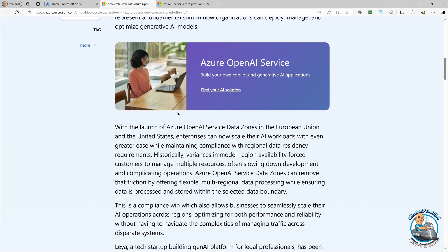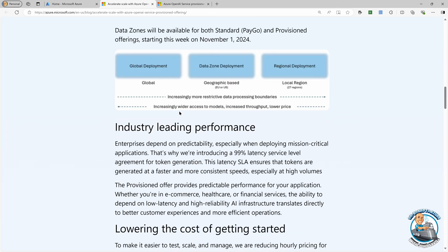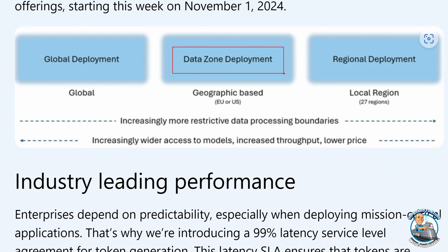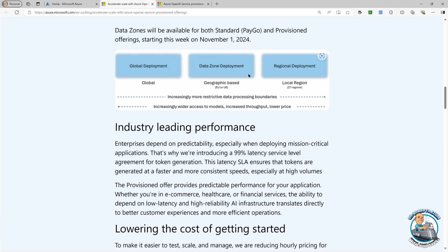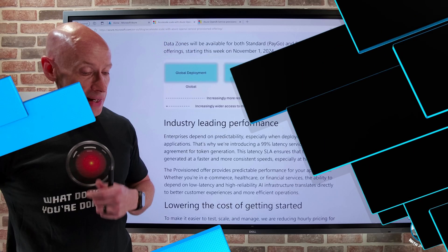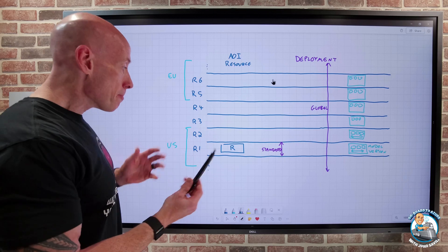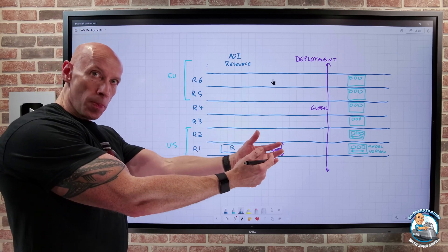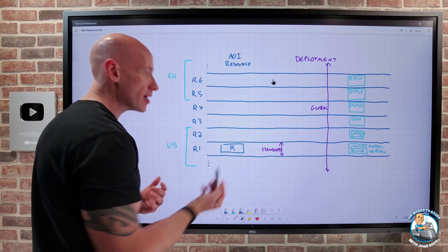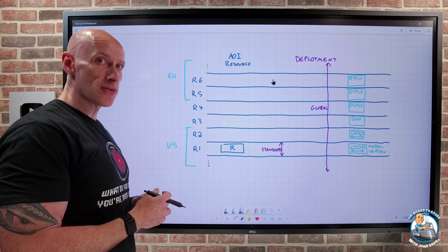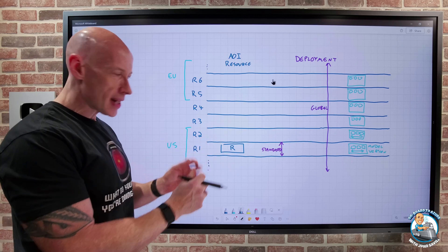The first one it talks about is related to this new option of data zones. This applies to both pay-as-you-go and also when I think about PTUs, provision throughput units. And really the big deal here is today we deploy our Azure OpenAI resource to a specific region. That's where our endpoint lives. That's our core unit of resiliency.